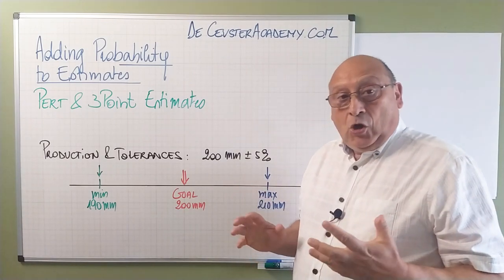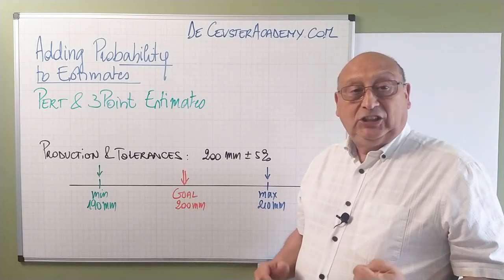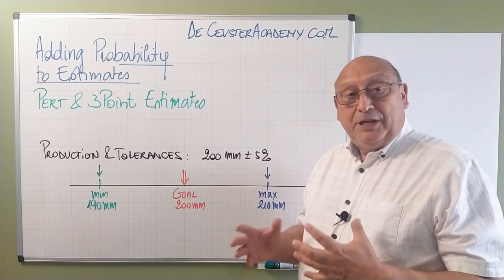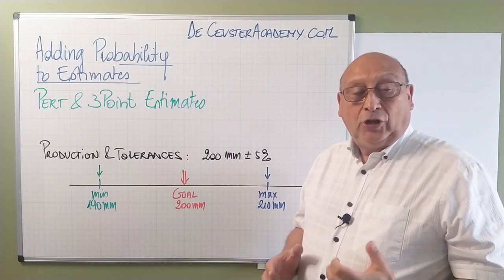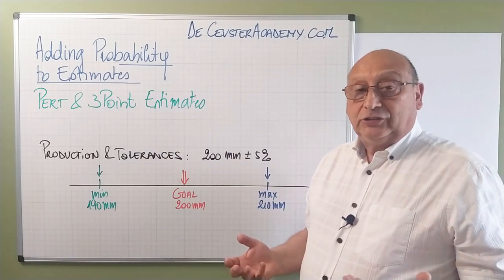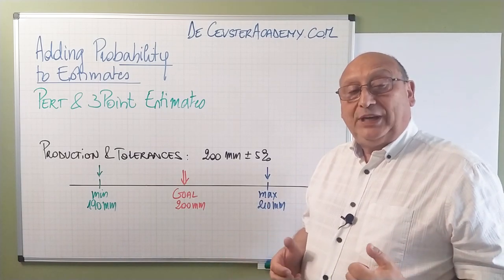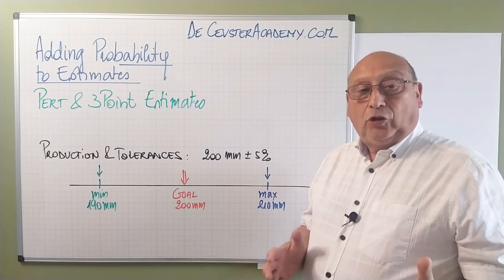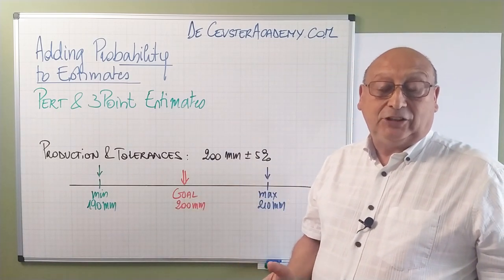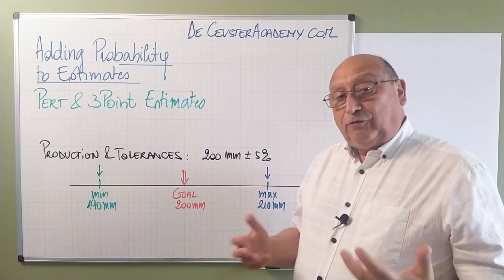When we look at this element here, we have a tool or a product we're making for which the normal, the goal dimension is 200 millimeters. But like I said, we cannot produce this exactly. So we have to see what are the minimum and the maximum values that will still be good so that we can put the products together and everything will be fitting. In this case, we have 200 millimeters plus or minus 5%. It means the minimum value should not be less than 190 millimeters, and the maximum value should not be more than 210 millimeters. This is the basis of all the processes.